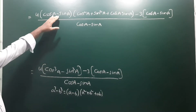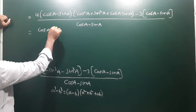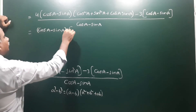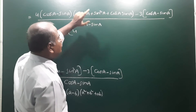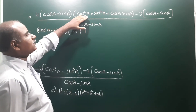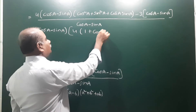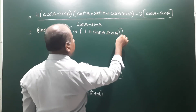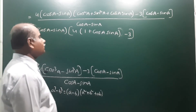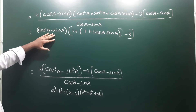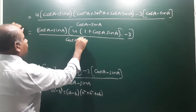Now take (cosa - sina) as common from the numerator. The remaining becomes 4(cos²a + sin²a + cosa·sina) - 3, all divided by (cosa - sina). The (cosa - sina) in the numerator and denominator cancel out.